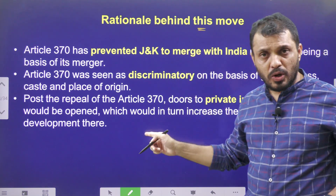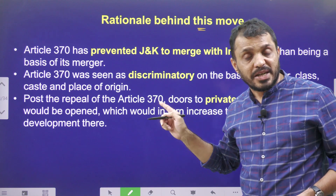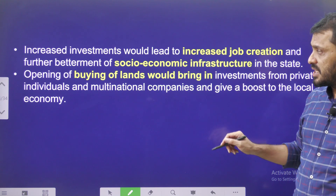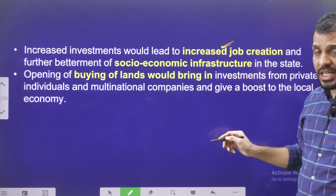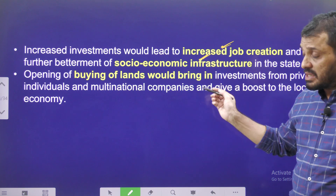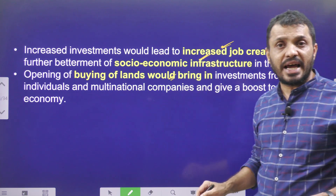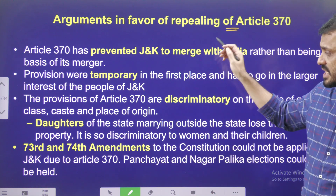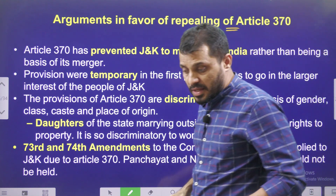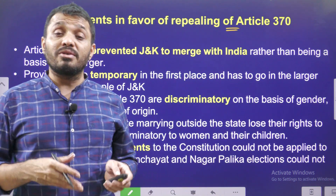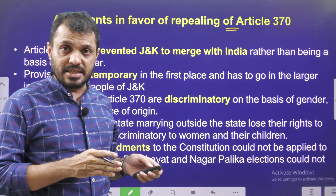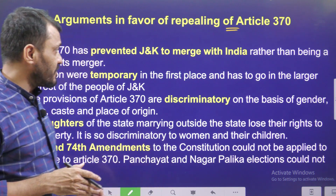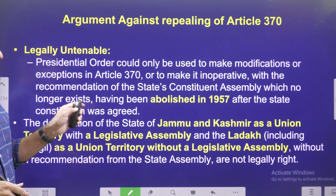The rationale behind this move was that the discrimination provided by Articles 370 and 35A was hindering job creation, socioeconomic infrastructure development, and outside investment. Those who supported economic development in J&K, or who felt Article 370 was discriminatory, supported the scrapping of Article 370.